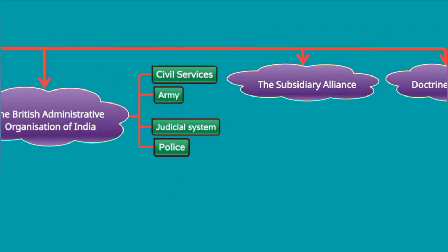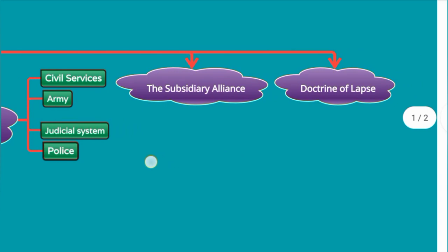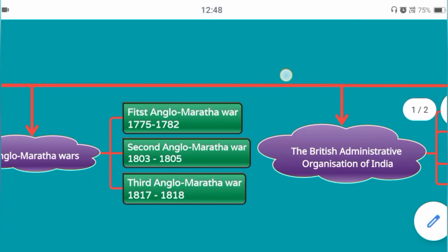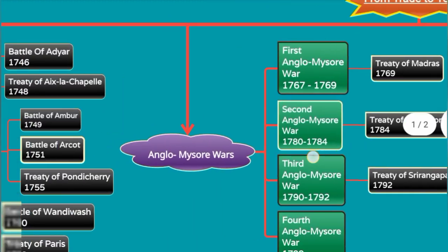The Subsidiary Alliance system was introduced to bring princely states under British control. This is associated with Lord Wellesley. The Doctrine of Lapse was a new policy adopted by Lord Dalhousie as chief architect of British expansion. This concludes the mind map overview from Trade to Territory.